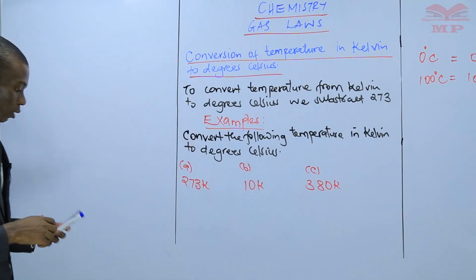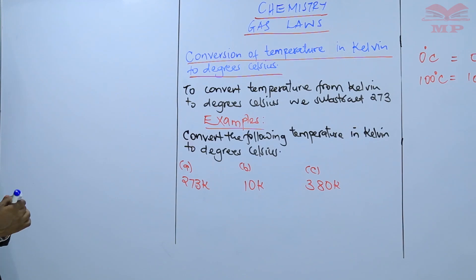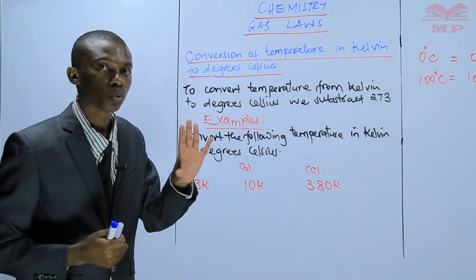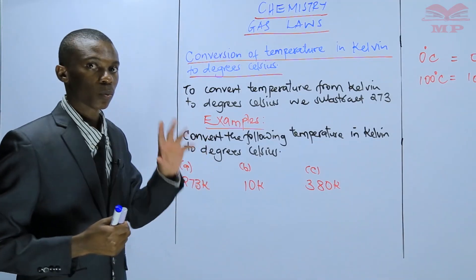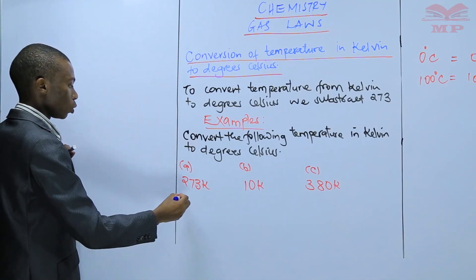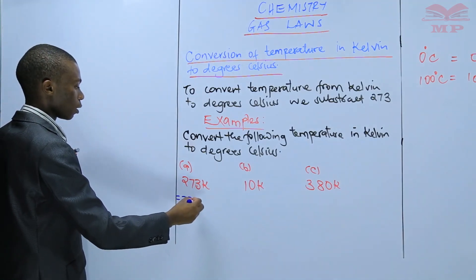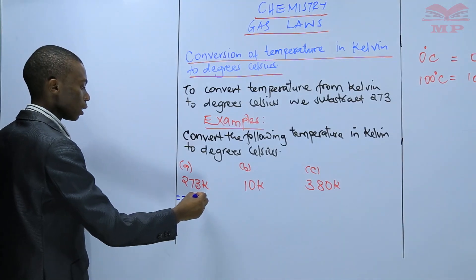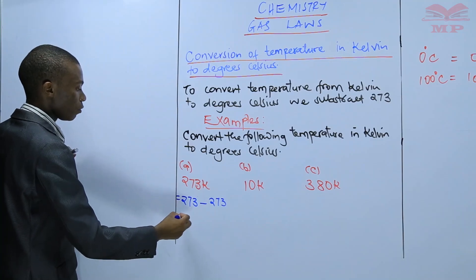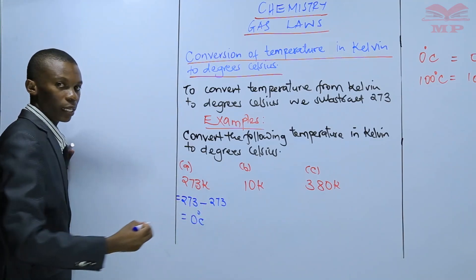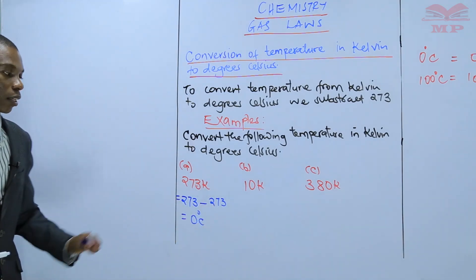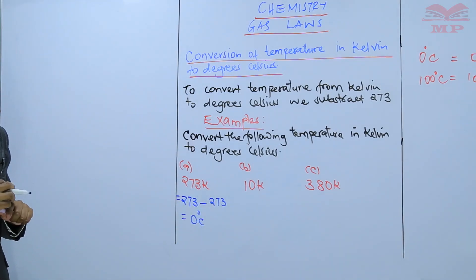Let us start with the first one. If you are given a temperature in Kelvin, to convert it to degrees Celsius you subtract 273. Therefore, 273 Kelvin minus 273 gives you 0 degrees Celsius.